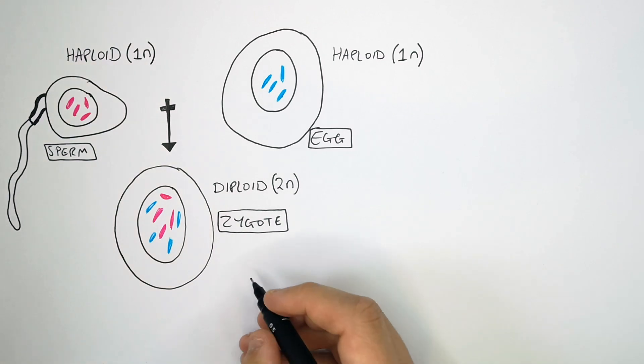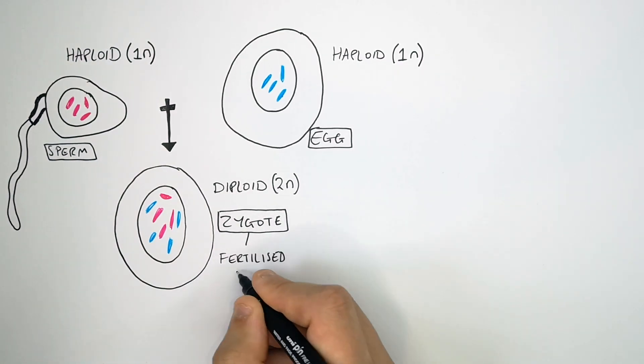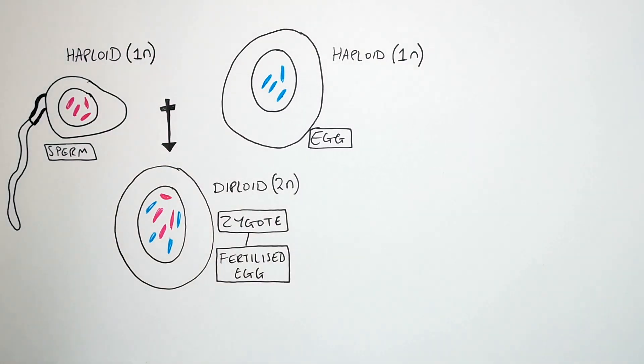A zygote is what we call a fertilized egg cell. It's a fertilized egg, which is diploid. It is the fusion of two haploid gametes to form a zygote, which is fertilization.